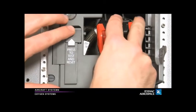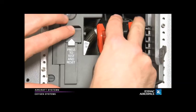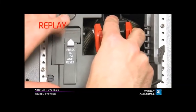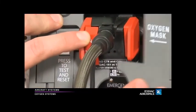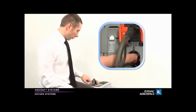To reset the system, firmly press then release the press to test and reset button on the stowage box. The oxygen flag will disappear. Then press the press to test button on the regulator.